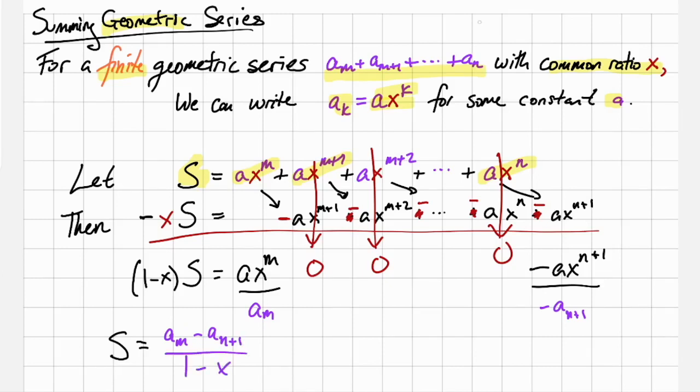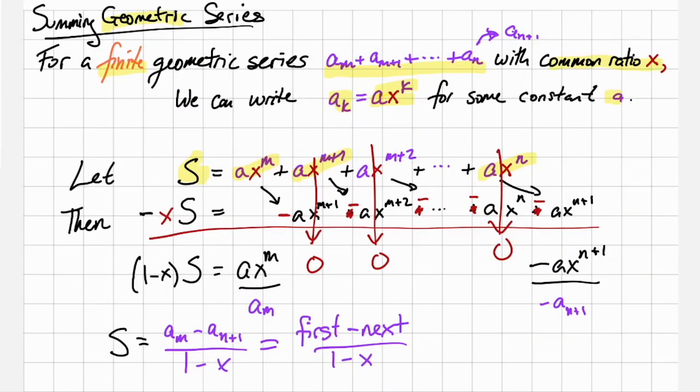Now a sub n plus one is the term after a sub n in that sequence. So the way I like to think about this sum is as the first term minus the next term, divided by one minus the common ratio. So let's look at some examples.